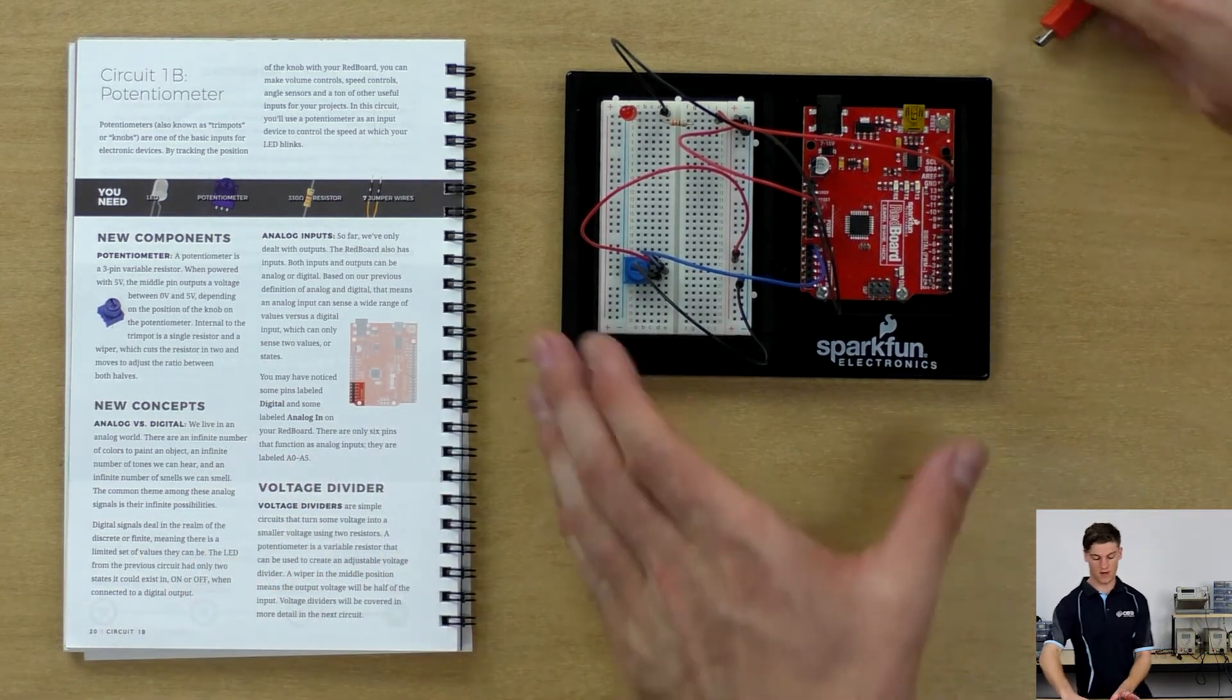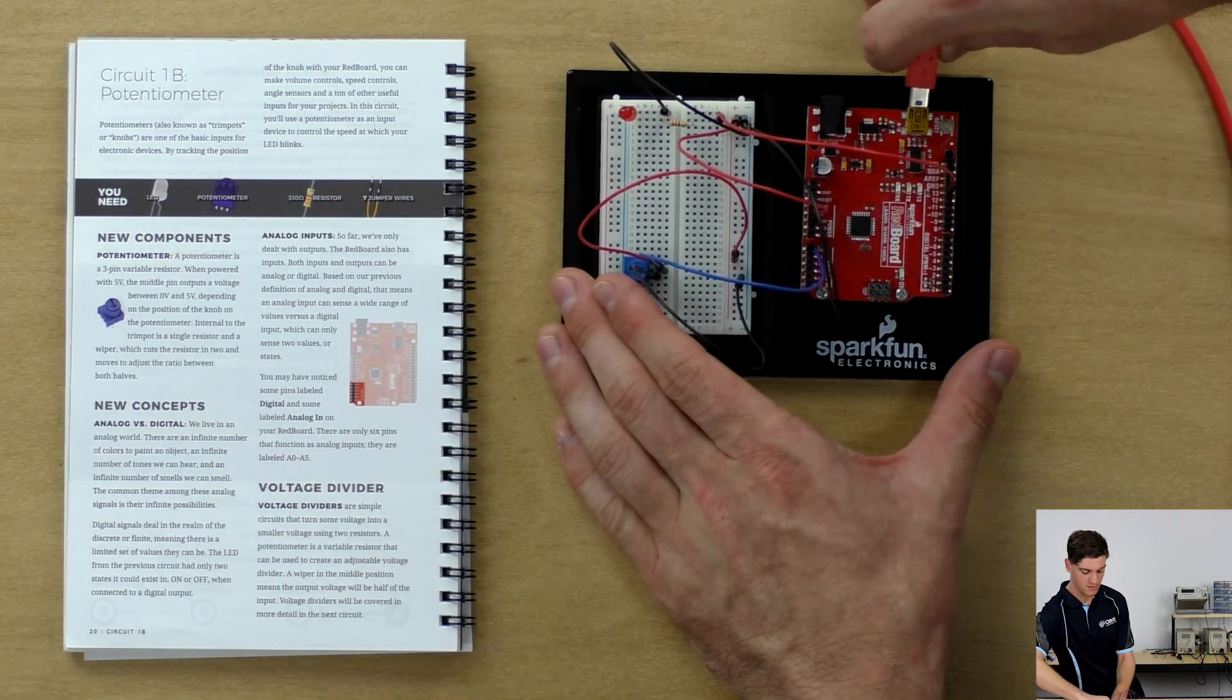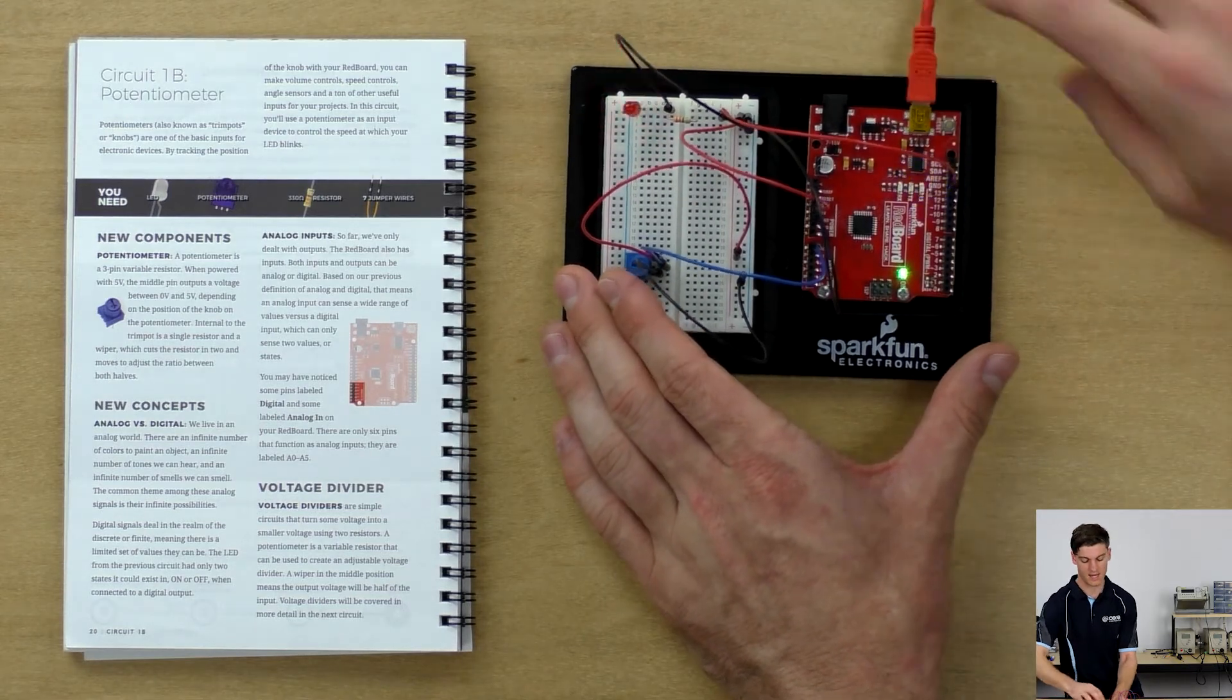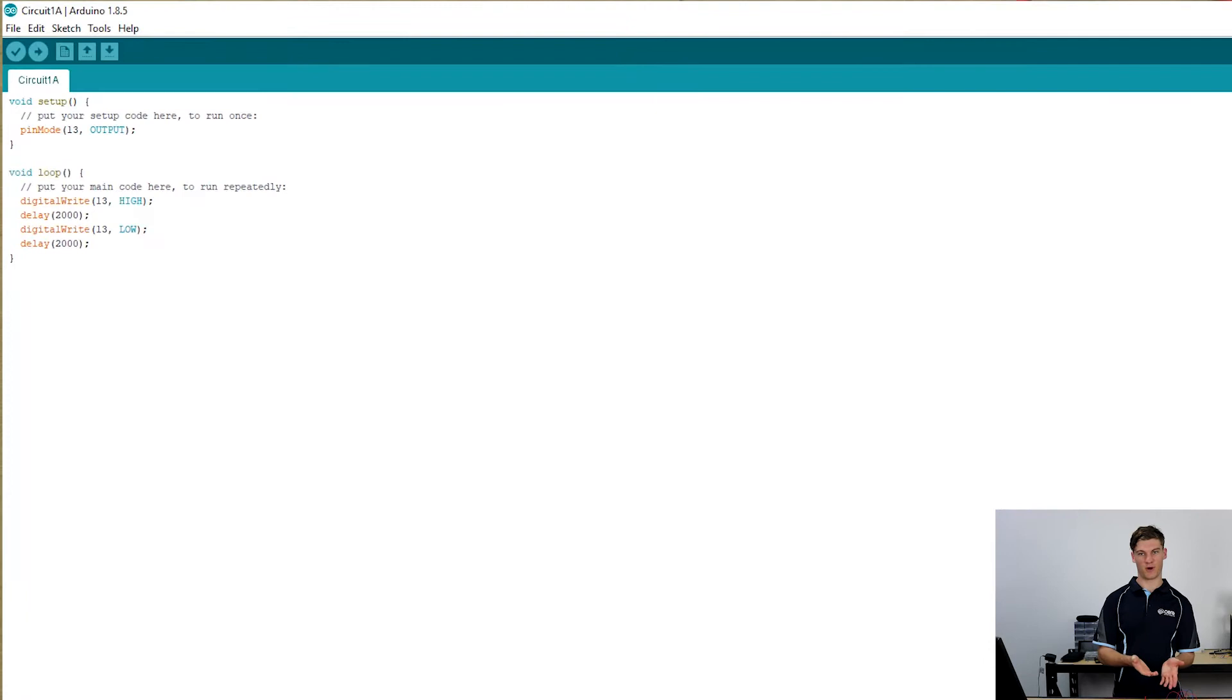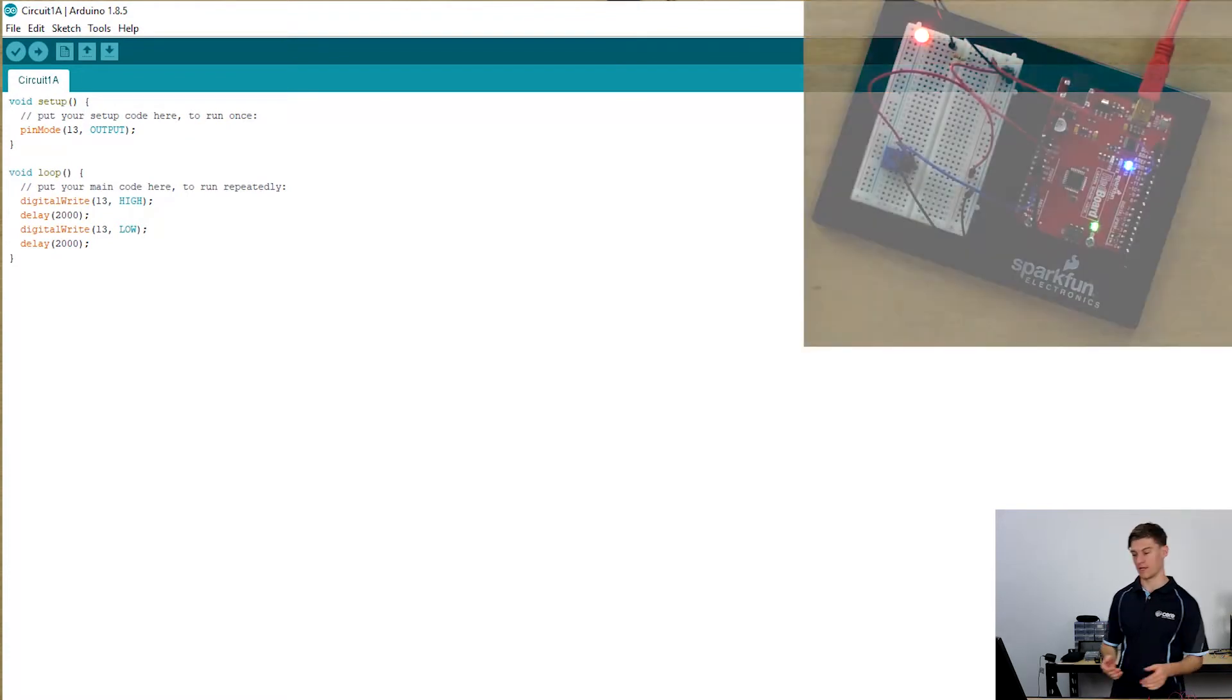Now that that's all connected, we're able to connect the red board to the computer and open up the Arduino IDE. Since it's an analog component, that is one new thing that we've got in the circuit, and we're going to add another new programming element.